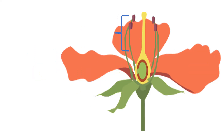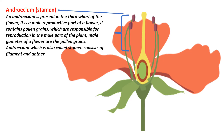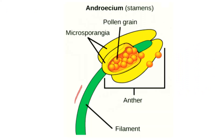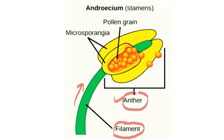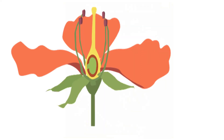Androecium: the male reproductive part of the flower, located inside the corolla. It consists of one or more stamens, each composed of a filament and an anther. The filament is the slender stalk-like part of the stamen that supports the anther. The anther is the swollen, pollen-producing structure at the top of the filament.